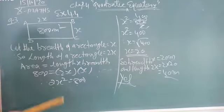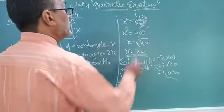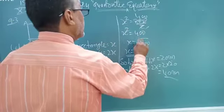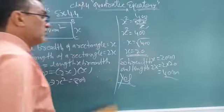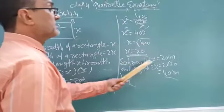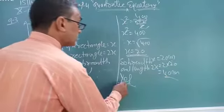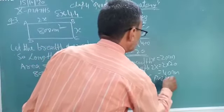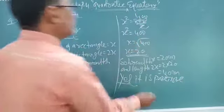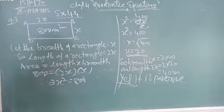Therefore, 2x squared is equal to 800. So x squared equals 800 upon 2 means 400. So what is x? Square root of 400 is equal to 20. So breadth x is 20, length 2x equals 2 into 20, 40. Yes, it is possible to design a rectangle plot with length 40 and breadth 20.